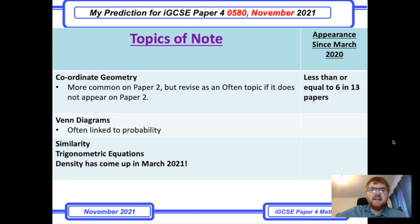I'll first talk about my topics of note, then the often topics that appear roughly between 50 and 75% of the time, and then finally my almost certain category. A couple of things I want to point out: coordinate geometry does come up on Paper 4 occasionally, but it's much more common on Paper 2. So please check out the Paper 2 prediction video. Venn diagrams comes up occasionally but it's often linked to probability. I've noticed density itself had a reasonably big question, about eight to nine marks, that came up in March 2021.